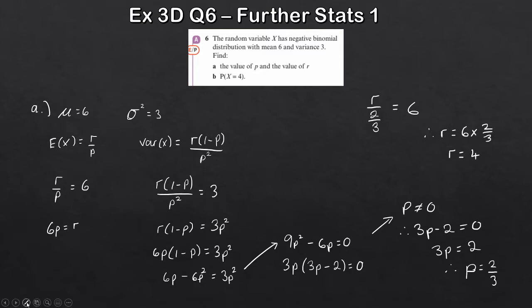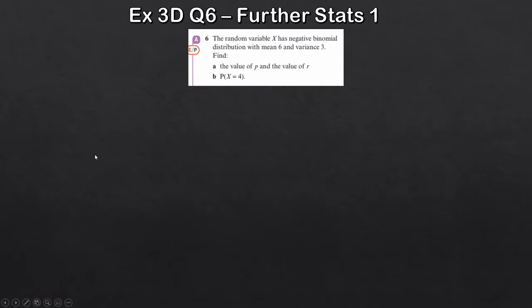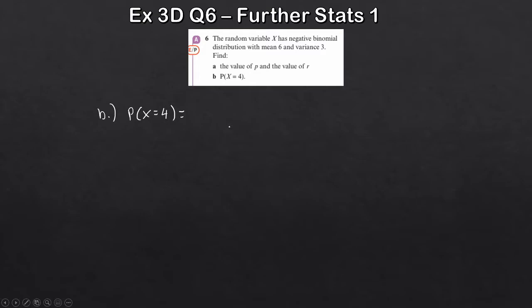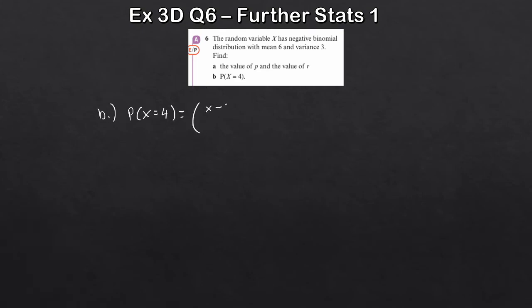For part B, we find the probability that X equals 4. This uses the negative binomial probability formula, which I don't believe you can do on a graphical calculator, so you need to know it by hand. The formula is: (x−1) choose (r−1), times p to the power of r, times (1−p) to the power of (x−r).